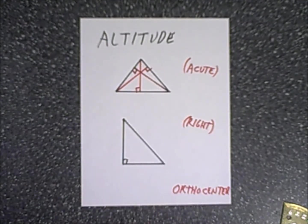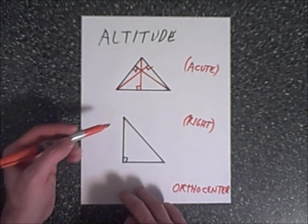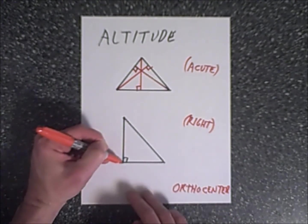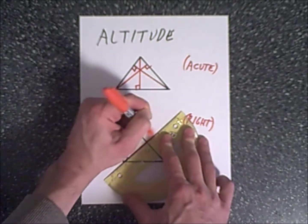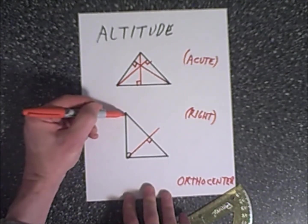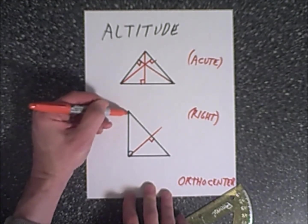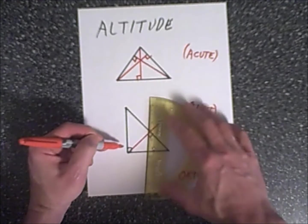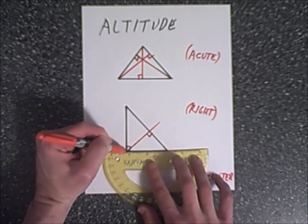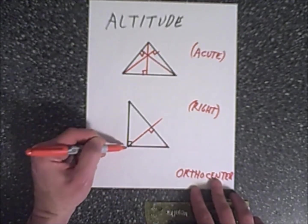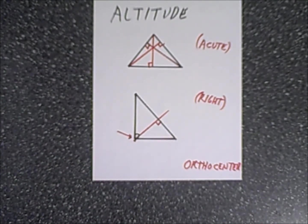For a right triangle it gets a little trickier. Starting at the 90-degree angle, we draw an altitude to the opposite side — perpendicular, no problem. At the corner where the hypotenuse and leg meet, if you draw a perpendicular line to the opposite side, you discover it's simply one of the sides of the triangle. The same with the other side — the orthocenter is simply the corner of the right triangle.